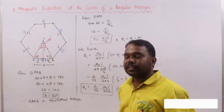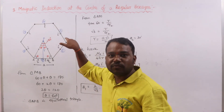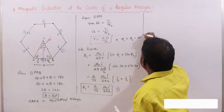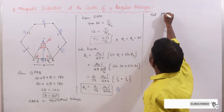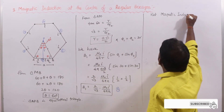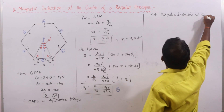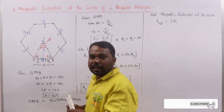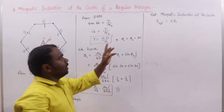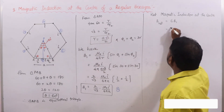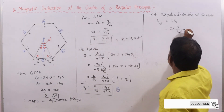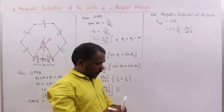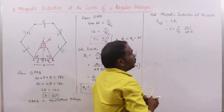The net magnetic induction at the center due to all six conductors, with the field going inward, is B_net = 6 * B1. Substituting B1 = (2/root(3)) * (mu_0 * I) / (4 * pi * a): B_net = 6 * (2/root(3)) * (mu_0 * I) / (4 * pi * a).